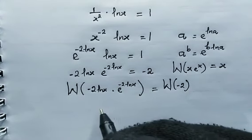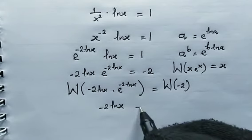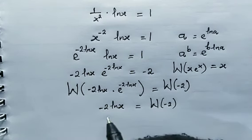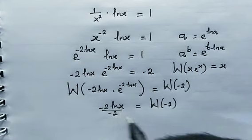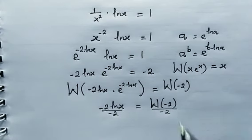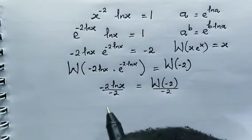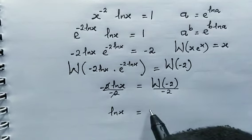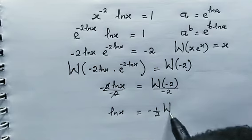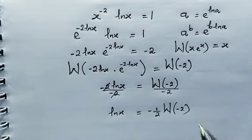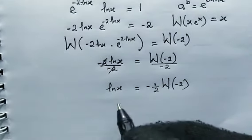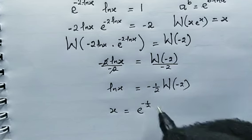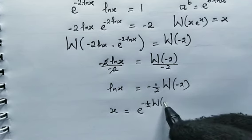From the left, this simplifies to just negative 2 times the natural log of x, which is equal to W of negative 2. Dividing both sides by negative 2, we have the natural log of x, which is equal to negative 1 over 2 times the Lambert W of negative 2. To solve for x, x is equal to e to the power of negative 1 over 2 times W of negative 2.